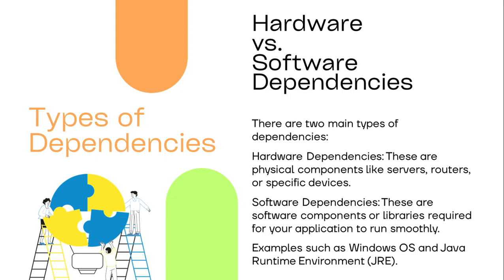There are basically two types of dependencies: hardware and software. Hardware dependencies are physical components like servers, routers, or specific devices crucial to successful execution. Software dependencies are software components or library files required for your application to run smoothly — and these may vary from a website to an Android application, to iOS, to IoT applications or cloud-based solutions. It is the fundamental thing on which your software or hardware is going to run, and you need to figure it out.